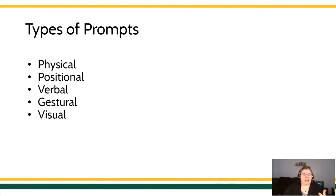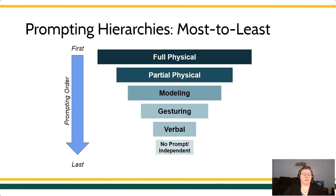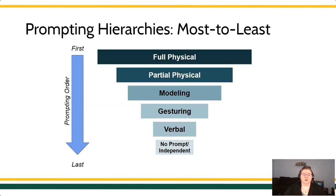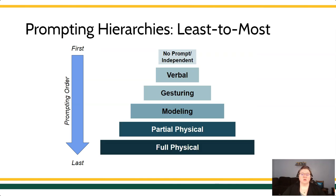Prompt hierarchies describe how we're going to go about using prompts. Are we going to use a most-to-least prompting hierarchy, where we start with the most intrusive level of prompting — a full physical — and then fade back into a partial physical, into modeling, into gestural, and so on? Or are we going to use least-to-most prompting, where we only layer on additional support as the learner needs it?